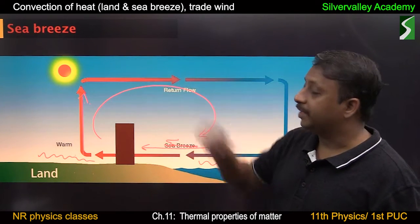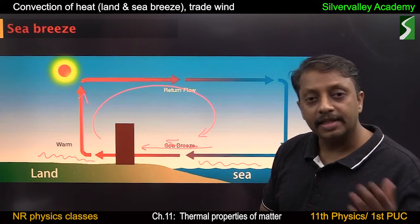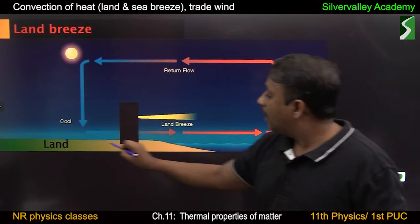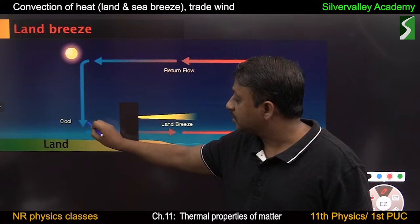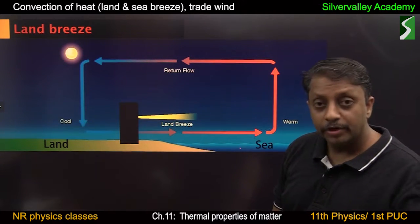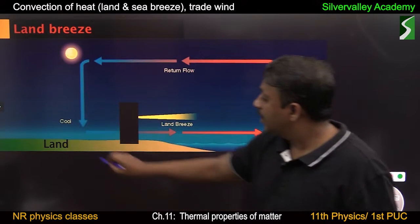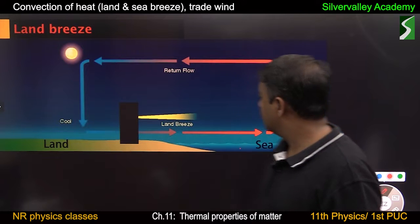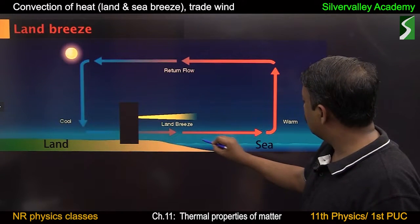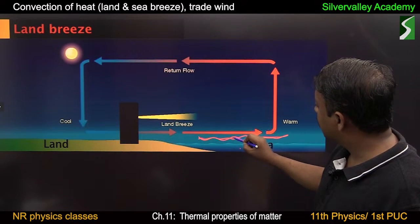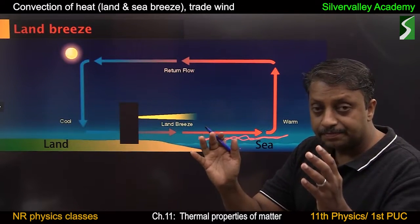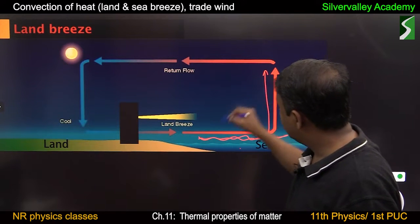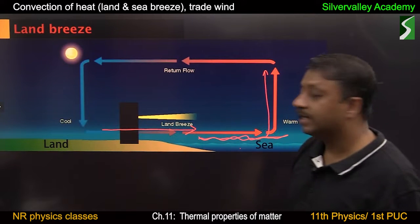Opposite of this is land breeze. If sea breeze is during daytime, land breeze will be during nighttime. During nighttime, this land mass loses heat energy faster than sea water. During daytime it absorbed heat energy, but during nighttime land loses heat energy faster than sea water. Since it loses energy faster, the air closer to the sea absorbs heat energy from the sea, expands, density decreases, and this air rises. As this air rises, that region is filled by air from the land — and that is land breeze.